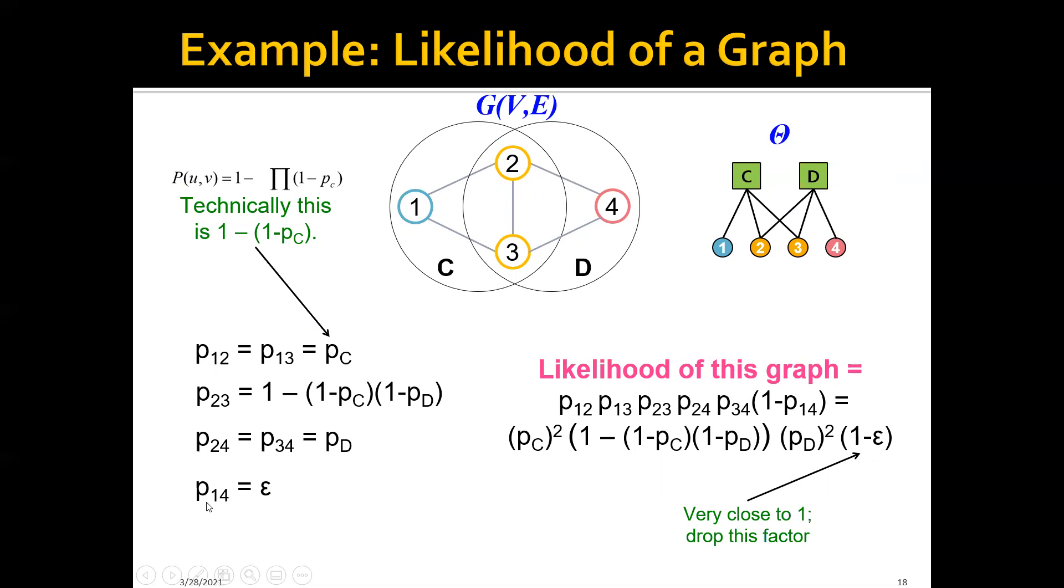And note that node 1 and node 4 don't have an edge, but basically we need to use a term that is 1 minus P(1,4), which is here.